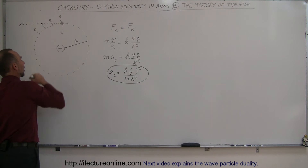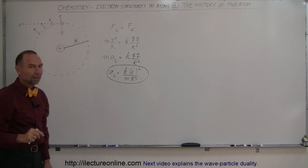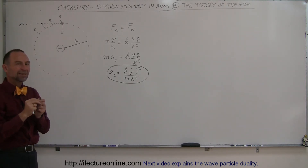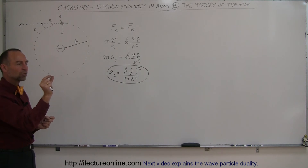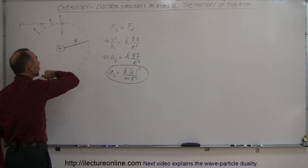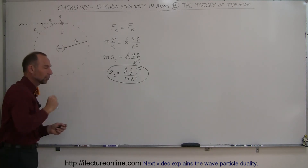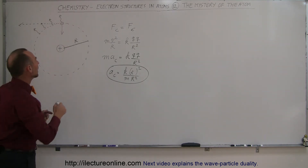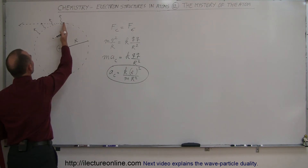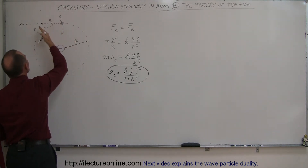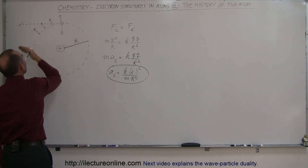The electron is being accelerated. The second thing that scientists knew is that whenever something is accelerated, and any time a charged particle is moving back and forth or being forced to go around in a circular path, it would radiate out energy. So any charged particle going around in a circle would continuously radiate out energy.